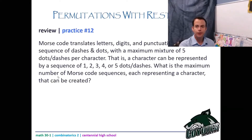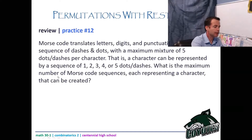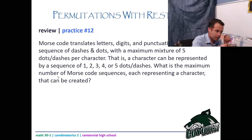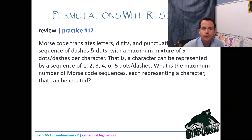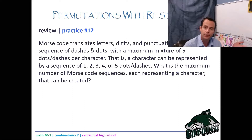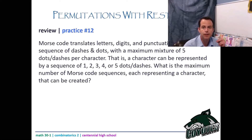I want to start today by going over two questions from your homework that historically lots of students have trouble with. The first one: Morse code translates letters, digits, and punctuation marks into a sequence of dashes and dots with a maximum of five dots and dashes per character — a character can be represented by a sequence of one, two, three, four, or five dots or dashes. What is the maximum number of Morse code sequences representing a character that can be created?